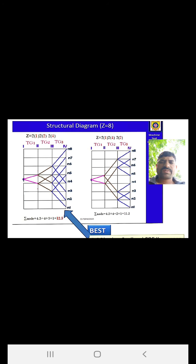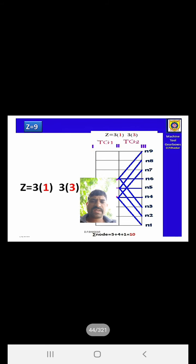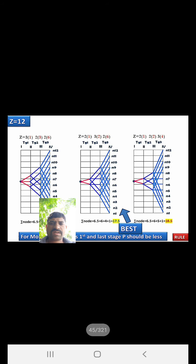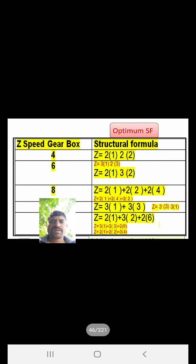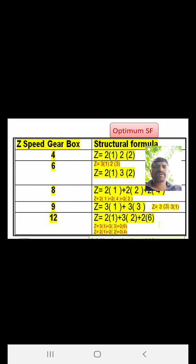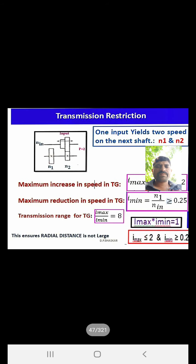Similar practice is given for z = 8, z = 9, and z = 12. Structural formulas have been written for four-, six-, eight-, nine-, and twelve-speed gearboxes. In examinations, z = 8, 9, or 12 are most commonly asked.